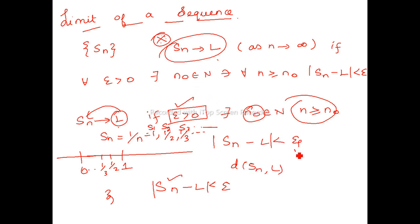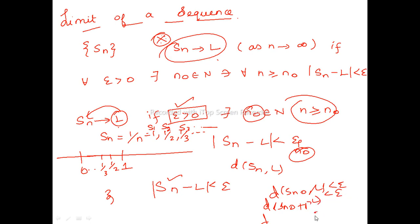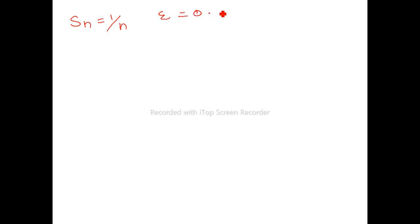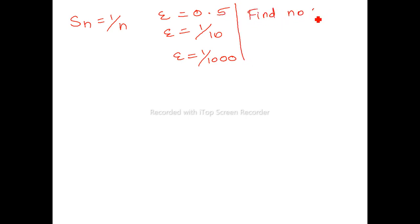This essentially means after n0: the distance d(SN0, L) < epsilon, d(SN0+1, L) < epsilon, and so on. Now let me give some examples. SN equals 1/n, epsilon equals 0.5; for the same sequence, epsilon equals 1/10; and epsilon equals 1/1000. The question is: find n0 such that |SN minus L| < epsilon.